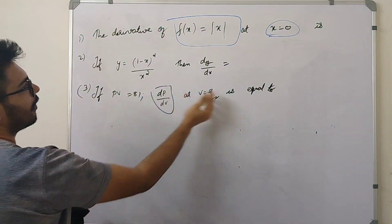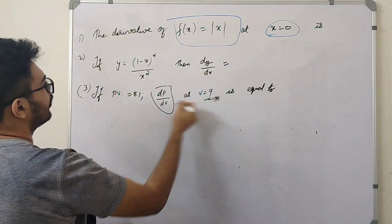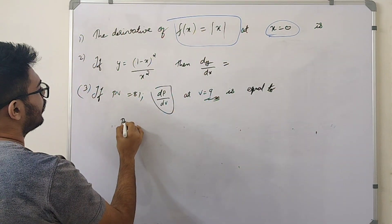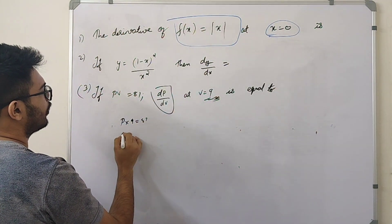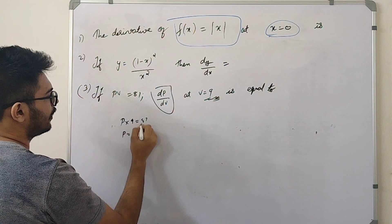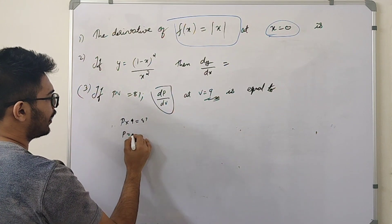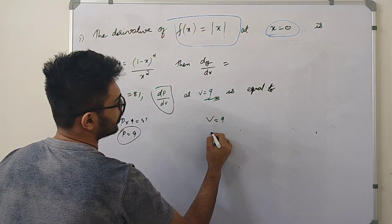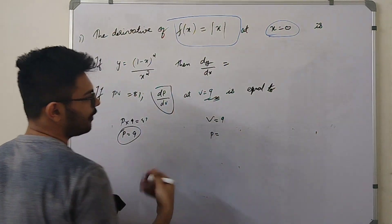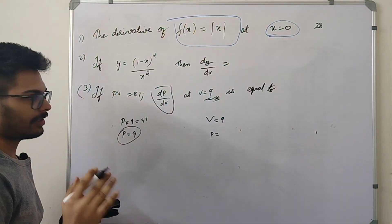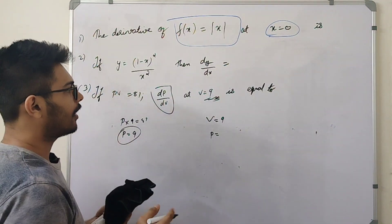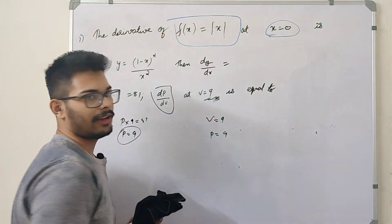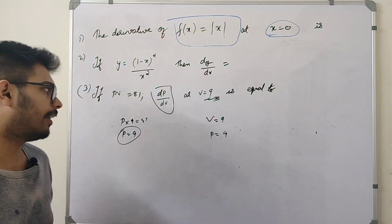If we put p equal to 81, then v equal to 9, p equal to 81. Now, p is equal to 81 divided by 9. V is equal to 9 and the pressure value is v. The variables are v equal to 9, p equal to 9.